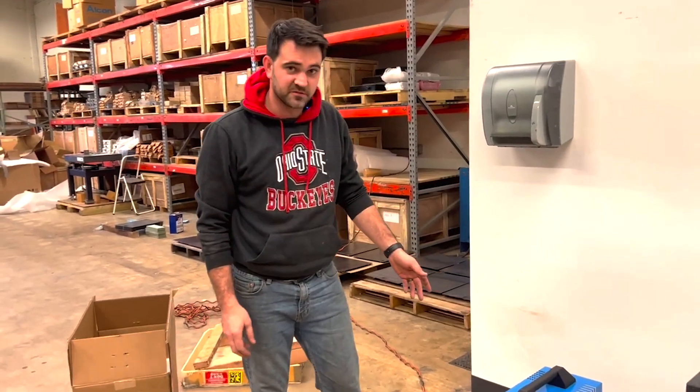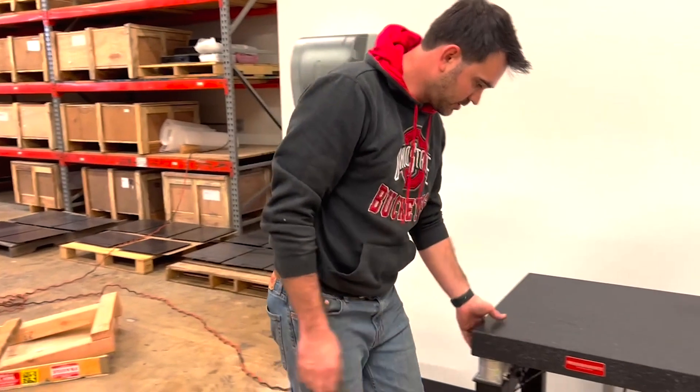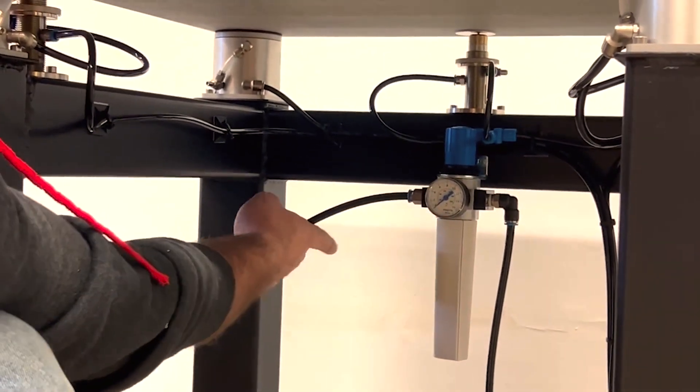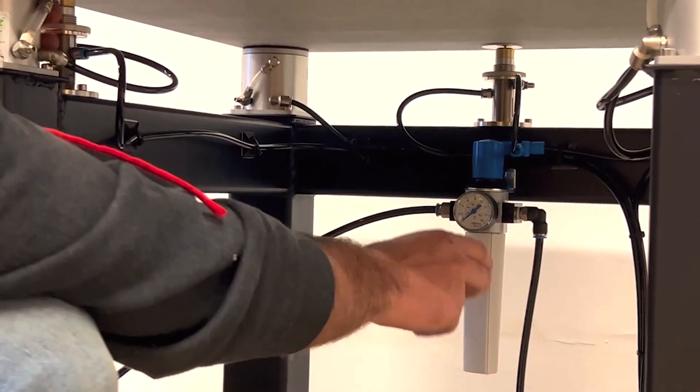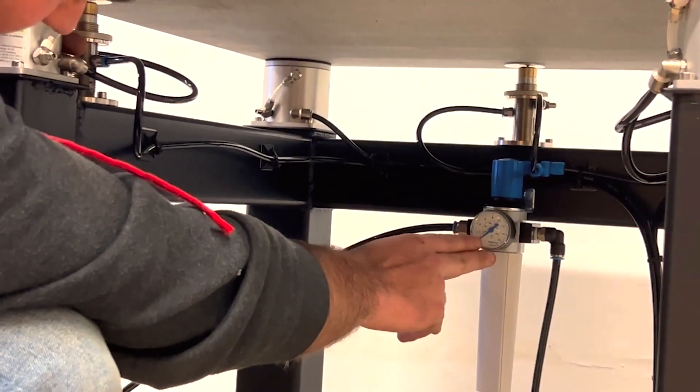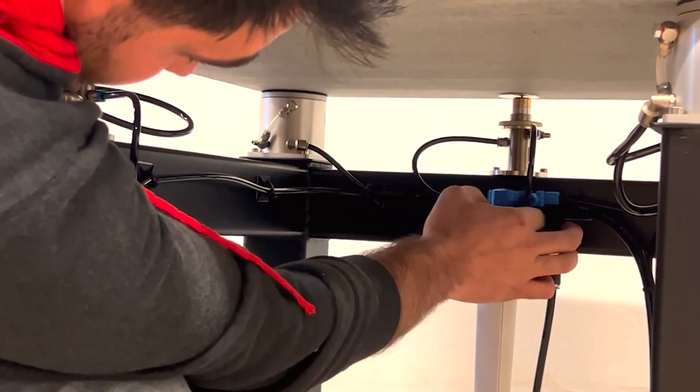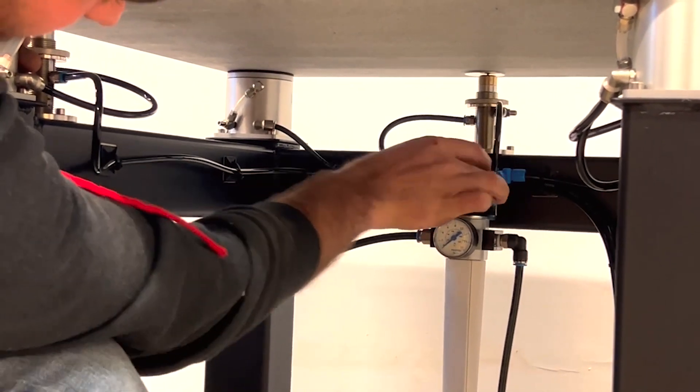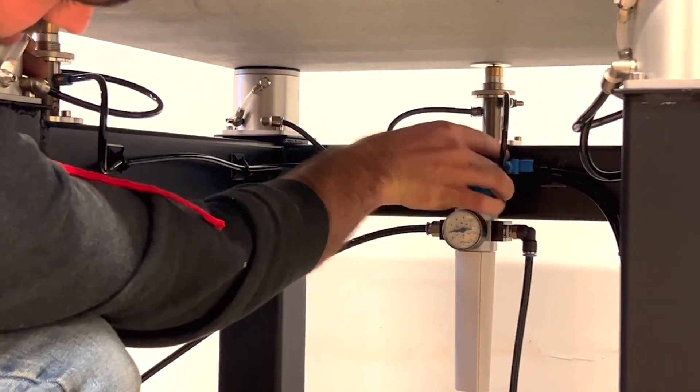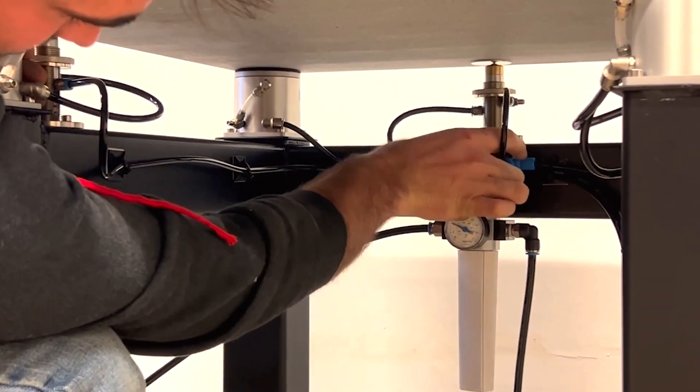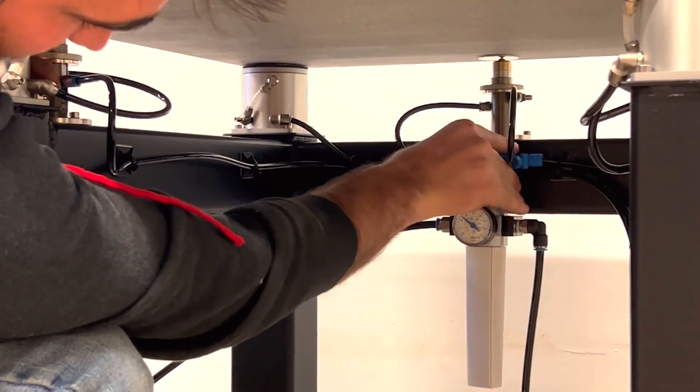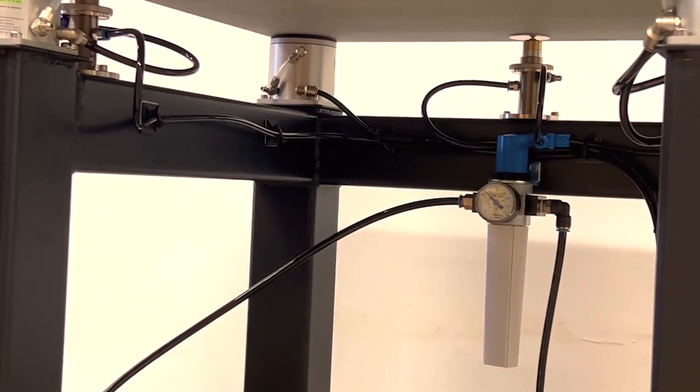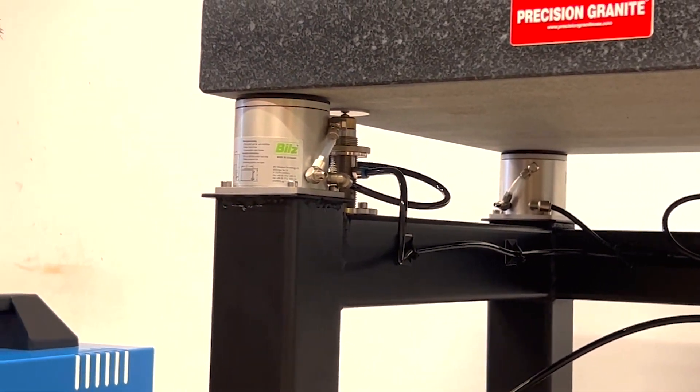Now that the air compressor's hooked up and pressurized, you'll come under here. There's a pressure regulator mounted to the frame where you'll hook your air input up to. This will be shipped to you with the pressure turned all the way down to zero psi. What you'll want to do is crank this top adjustment knob until the pressure gauge on the regulator reaches about six bar. And as you crank the pressure up to six bar, your isolation table should begin to lift the granite and level itself out.